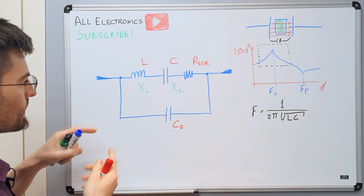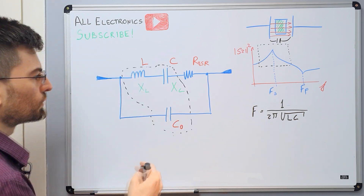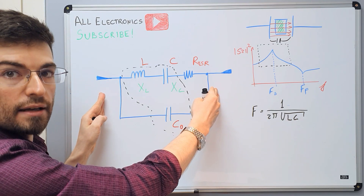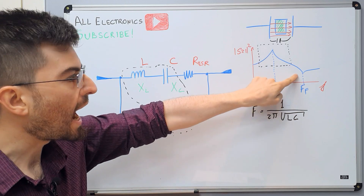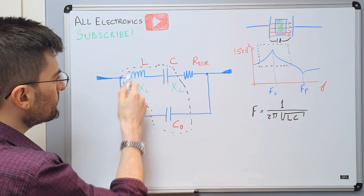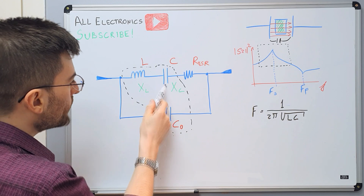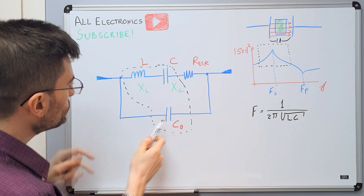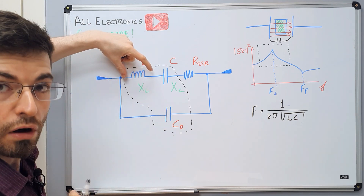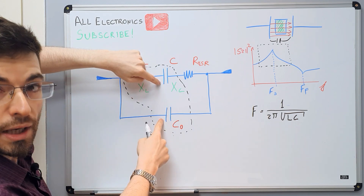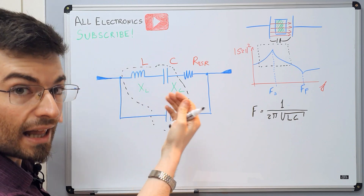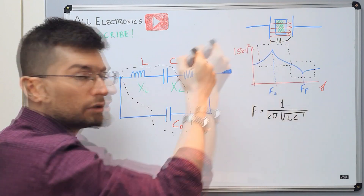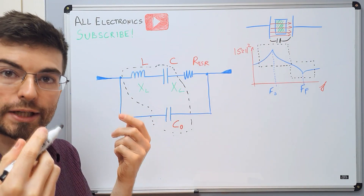Why does this happen? We now have a parallel circuit formed — this circuit is in parallel with the connections, forming an LC parallel tank. The parallel resonant frequency occurs a little higher because the inductive reactance is actually seeing the two capacitors — Cm and C0 — in series. The combination of two capacitors in series is a lower capacitance, creating a resonance slightly above the series resonance.